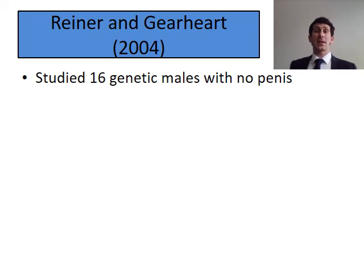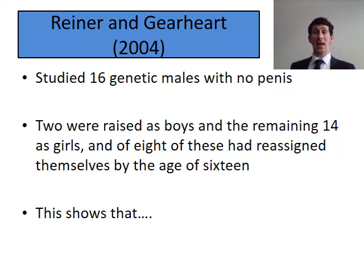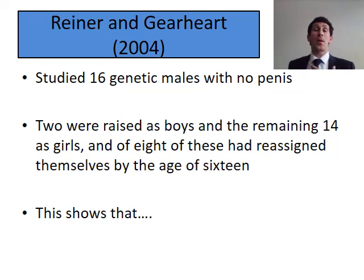Reina and Gihar also looked at intersex children — specifically 16 genetic males who were all born with no penis. Two of them were raised as boys, and the remaining 14 were raised as girls. By the age of 16, eight of those 14 had reassigned themselves to being male. This shows that these children were always biologically pre-programmed to be male — the fact that the majority reverted back to being boys, even though they were raised as girls, indicates that biology, genetics, and hormones have a big impact on gender development.